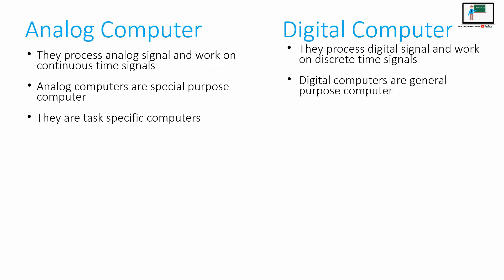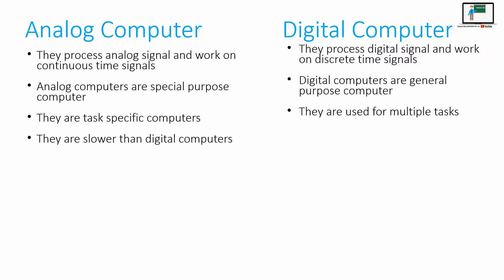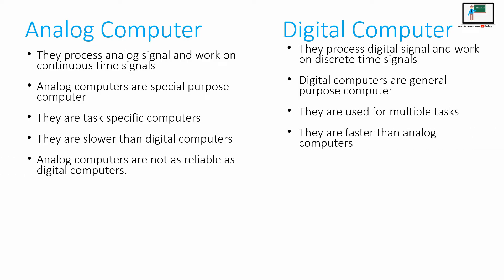Analog computers are task specific — they can do only one task effectively. Whereas digital computers are used for multiple tasks. Analog computers are also slower and less reliable than digital computers. Whereas digital computers are faster and more reliable.